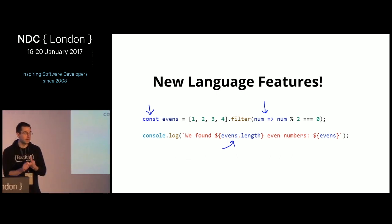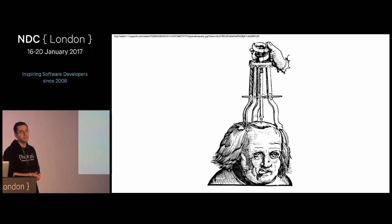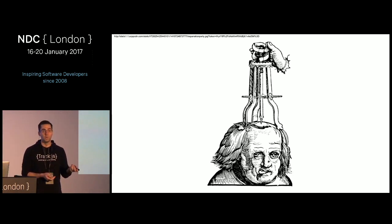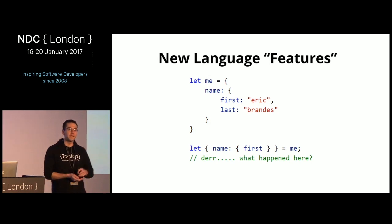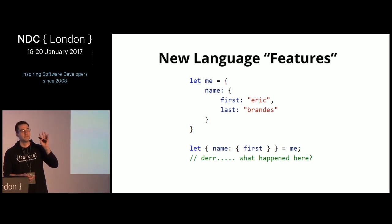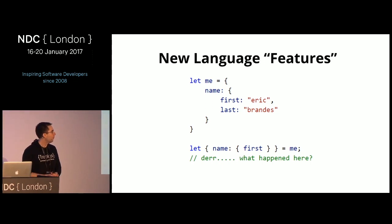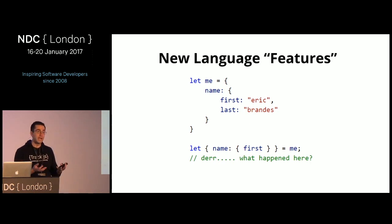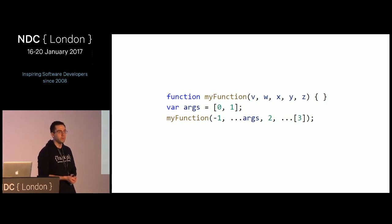We've got new language features — const, fat arrow functions, string templates, these are all good things. But like Victorian-era medicine, there are some bad things. Back in the day people thought it was a good idea to drill holes in your skull — trepanation. Some things I think are similar today, like destructuring, particularly nested destructuring. If I caught someone using deeply nested destructuring code I'd be pretty upset because it's not immediately clear what's going on. The same issue exists with the spread operator.